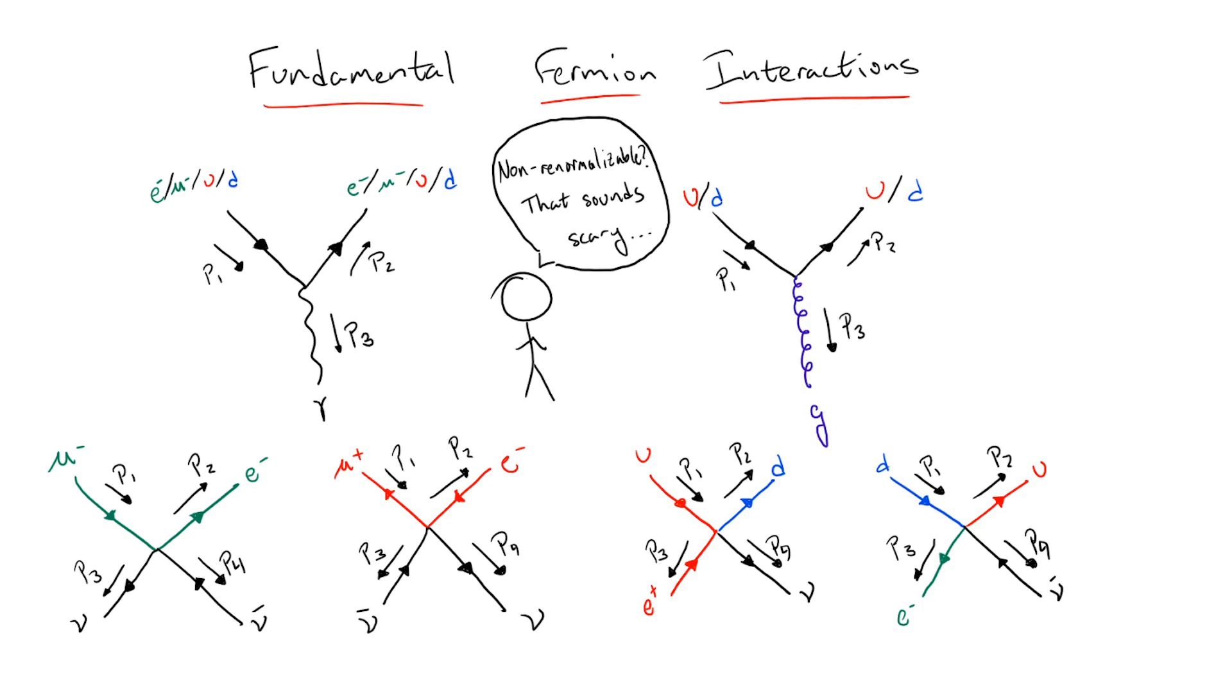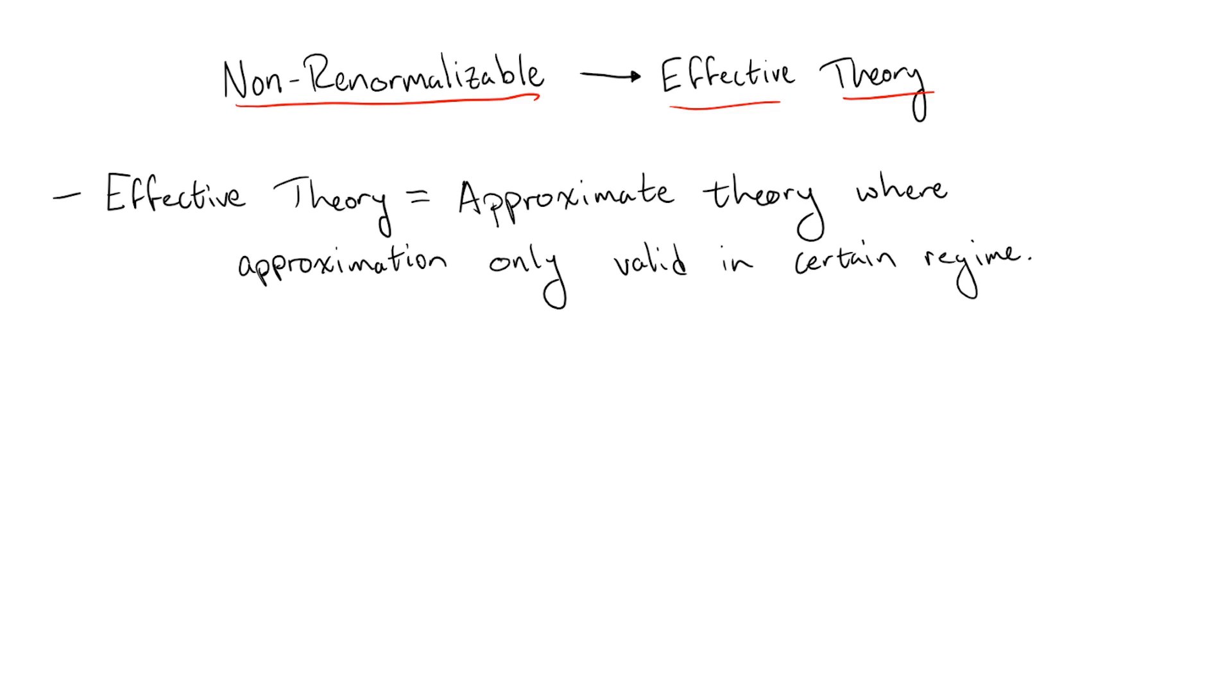See, non-renormalizable theories in and of themselves are not problematic. In fact, theories such as this one have a very convenient interpretation as effective theories, meaning that they are perfectly valid to use and in fact truncate to a finite number of interactions as long as the processes that we study stay within a certain energy regime. In this case, low energies.